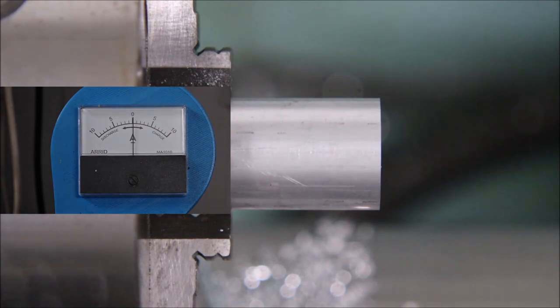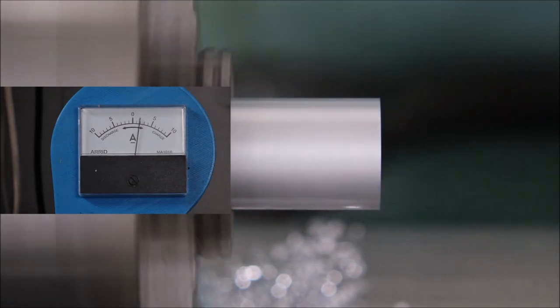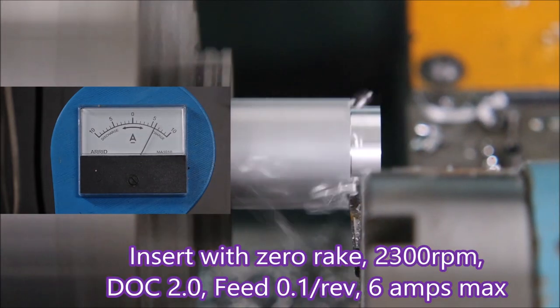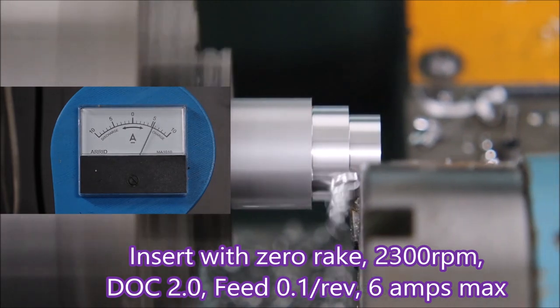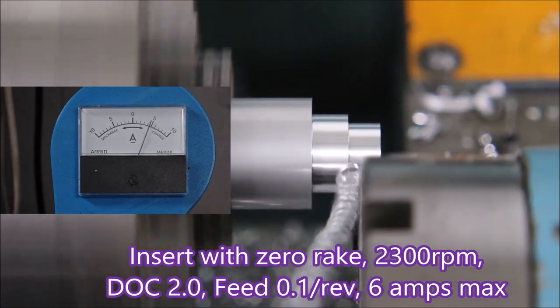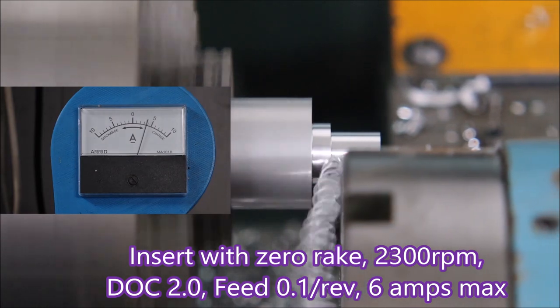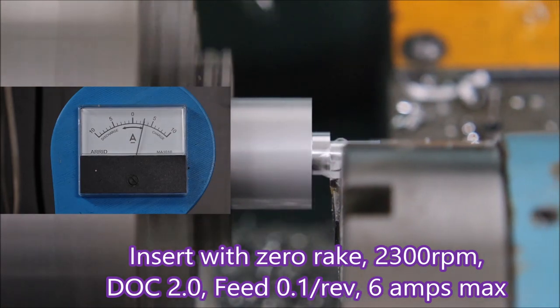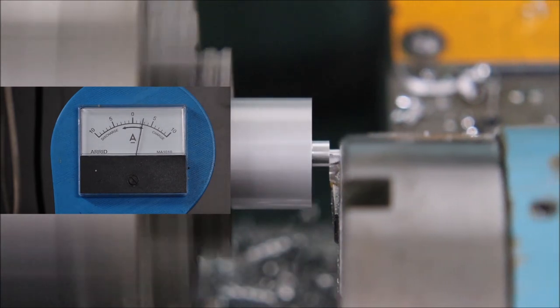Right, now we start off with the zero rake insert. You'll see that it draws about six amps and drops off as the cuts move into smaller diameters. Cutting quite nicely actually. As we're removing less metal, the current drawn is going down.